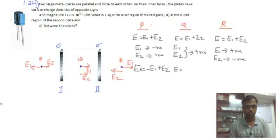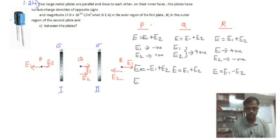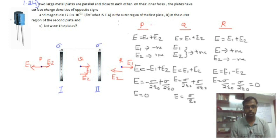Applying the formula: at point Q, E equals E1 plus E2. At point R, E equals E1 minus E2. At point P, E equals negative sigma over 2 epsilon-naught plus sigma over 2 epsilon-naught, which gives zero. Similarly, in the outer region of the second plate, the electric field is also zero. Between the plates at point Q, the electric field is sigma over 2 epsilon-naught plus sigma over 2 epsilon-naught, giving sigma over epsilon-naught.